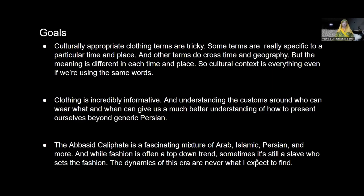We've started to get away from just the big Middle Eastern umbrella. Persia is kind of that next big umbrella — there are so many different cultures that get grouped under Persia, even when the Persians aren't the people in charge. The Abbasid Caliphate is an Arab Islamic controlled Persia. Fashion we frequently think is a top-down thing, and that is accurate — the people in the palace dress certain ways, the next people down try to copy them — but who's in the palace in this era is really fascinating. Sometimes you have slaves setting the fashion trends, so it's a really interesting time period.